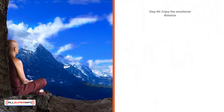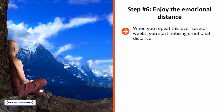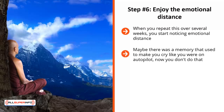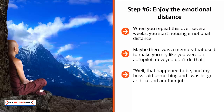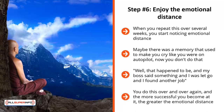Step number six: enjoy the emotional distance. When you repeat this over several weeks, you start noticing emotional distance. Mental images and memories that used to throw you off track no longer do. Maybe a memory used to make you cry like you were on autopilot — now you just say: that happened to me when I was four years old, and you let it pass. That happened to me, my boss said something and I was let go, and I found another job — you let it pass. That was my best friend and my ex-girlfriend — you let the memory pass. You do this over and over again. The more successful you become at it, the greater the emotional distance. Eventually, all that stuff that used to drag you down and hold you back is left in the past. Congratulations.